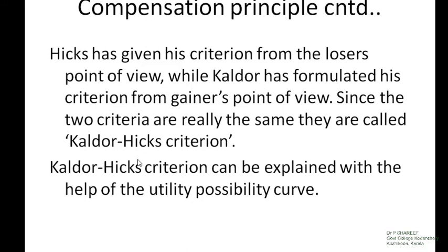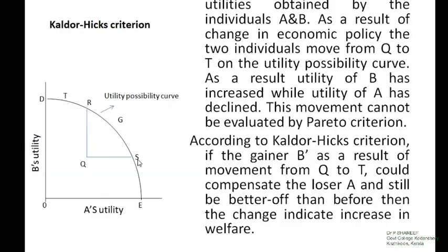The Kaldor-Hicks criterion can be explained with the help of a utility-possibility curve. The utility-possibility curve depicts different combinations of utilities enjoyed by two individuals from consuming two commodities.